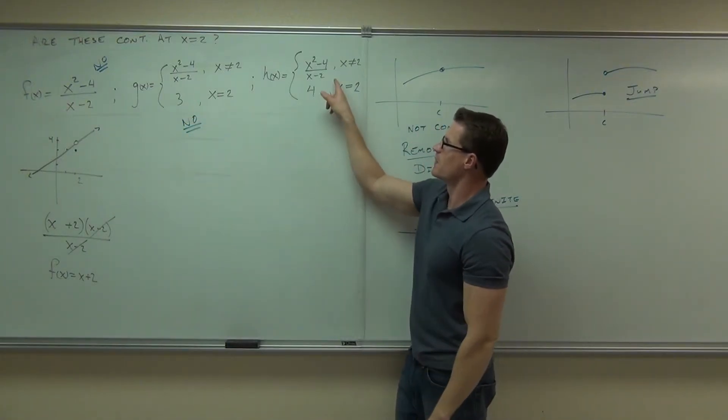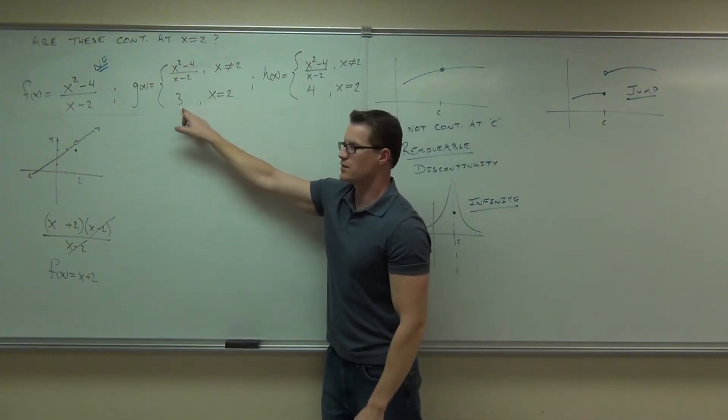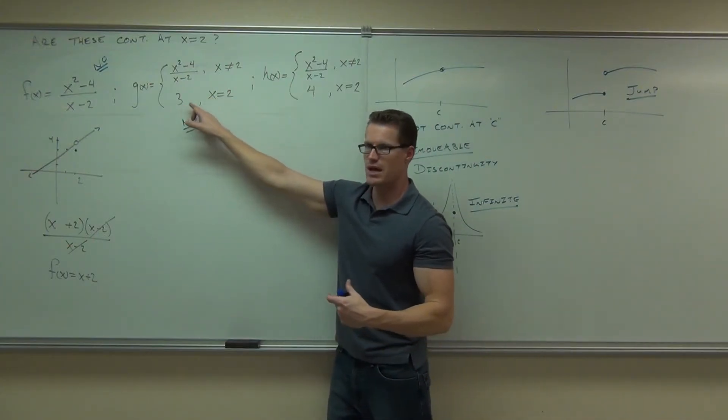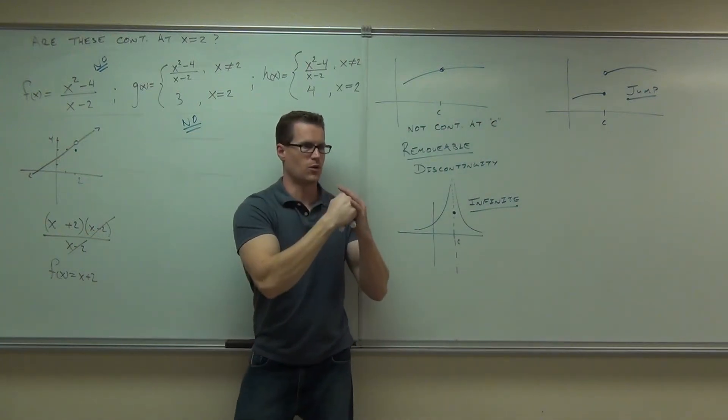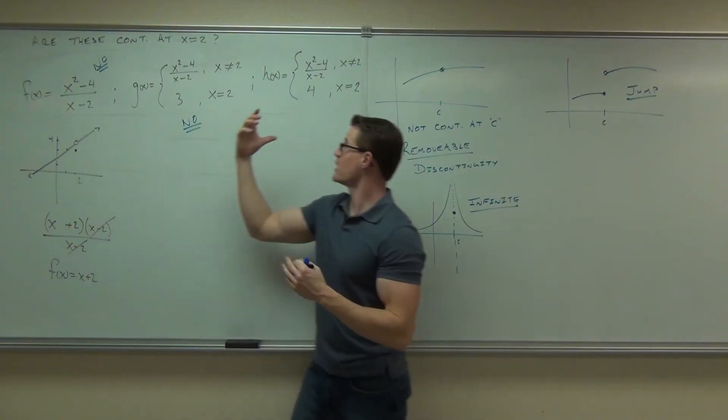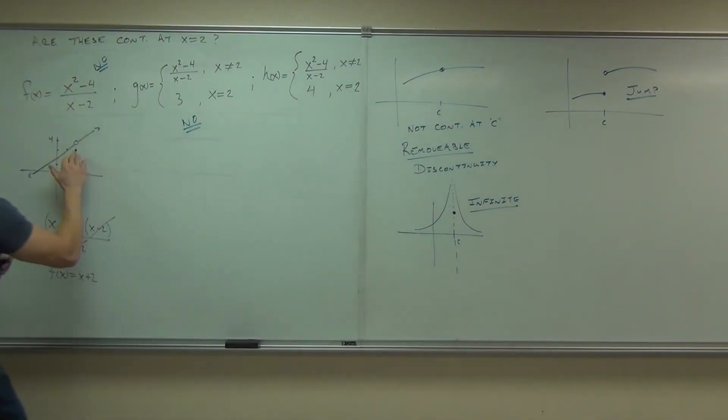h2 of x says, okay, now, it looks almost identical to g of x, except instead of having x equals 2 defined at 3, we have x equals 2 defined at 4. Tell me, does the 4 fill in the hole? Yes. So by making a piecewise function and defining just one single point, we go, oh, well, how about this?